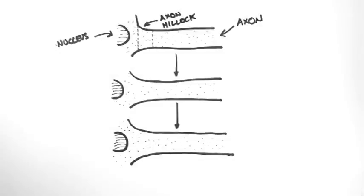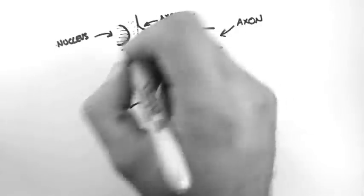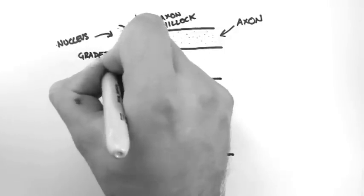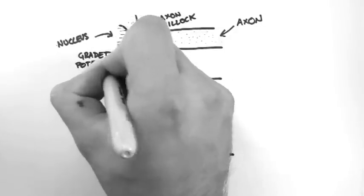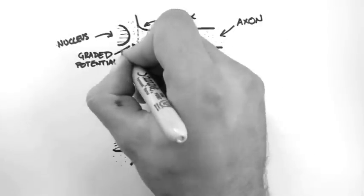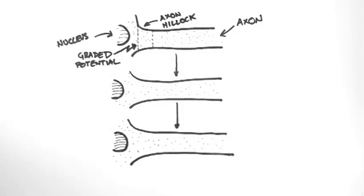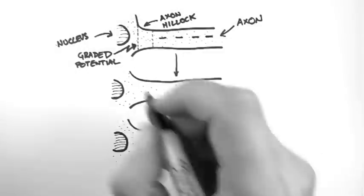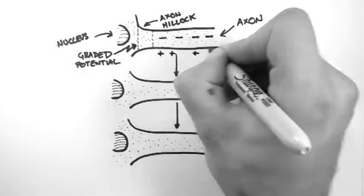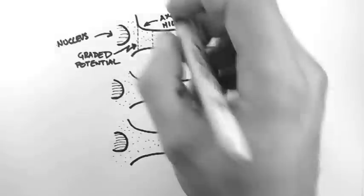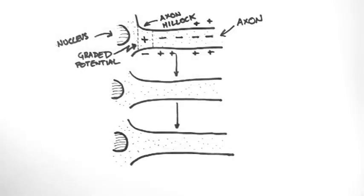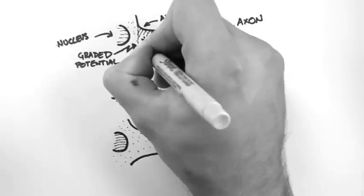The axon hillock is where action potentials begin. So a stimulus is applied to the axon hillock, and usually this stimulus is what we call a graded potential. We're not going to talk about graded potentials in this tutorial, but just know that they are a flow of positive charge. Now everywhere but the axon hillock, the membrane is at its resting membrane potential.